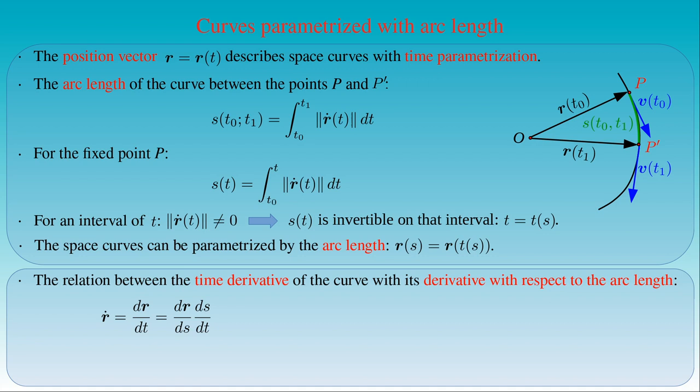Let us denote the derivative with respect to the arc length s by the symbol prime. Then r-dot is equal to r-prime times s-dot. Since the derivative of the arc length s is the length of the tangent — that is, the derivative of the position vector r with respect to the parameter t — we have r-prime times the length of r-dot. As a result, we can express the derivative of the position vector with respect to the arc length as the ratio of its time derivative to the length of its time derivative. We also see that this derivative has unit length; that is, it is the unit tangent to the curve.